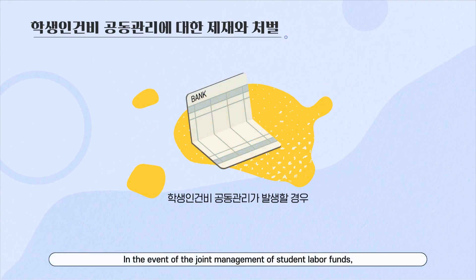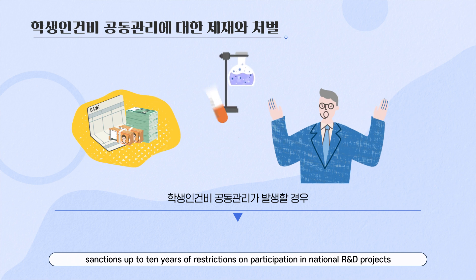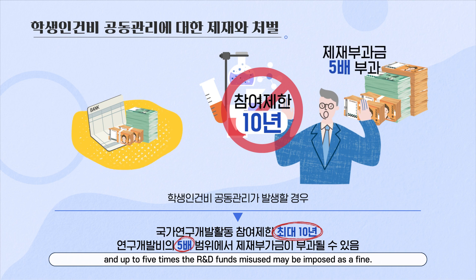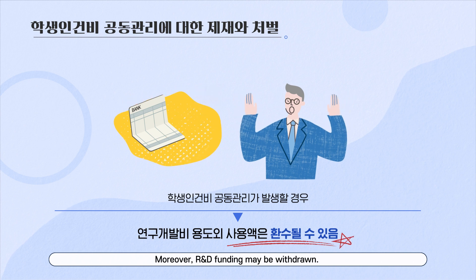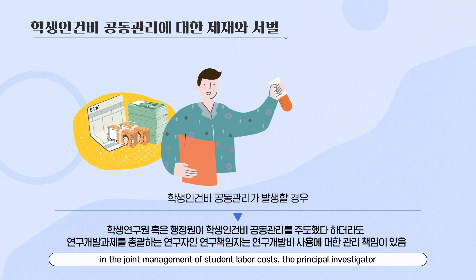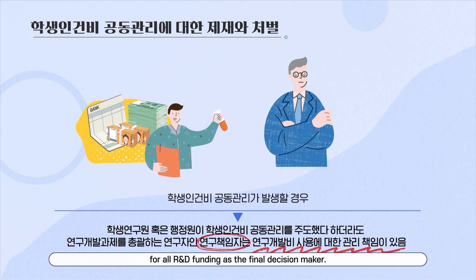In the event of the joint management of student labor funds, sanctions up to 10 years of restrictions on participation in national R&D projects and up to five times the R&D funds misused may be imposed as a fine. Moreover, R&D funding may be withdrawn. Furthermore, even if student researchers or administrators became involved in the joint management of student labor costs, the principal investigator who is in charge of the R&D project shall be responsible for all R&D funding as the final decision maker.